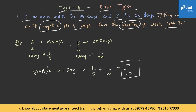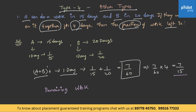Having achieved this value, the fraction of work left equals total minus 7 by 15, which is 8 by 15. So the fraction of work left is 8 by 15.